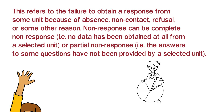Non-response error is of two different types: one is complete non-response error and the other is partial non-response error. Non-response can be complete non-response — that is, no data has been obtained at all from a selected unit. For example, if I designed a survey with 30 questions and the individual did not attempt even a single question, that is complete non-response. Partial non-response means that the individual answered some questions — like 10 or 15 — but did not answer the remaining ones. That kind of error is known as partial non-response error.